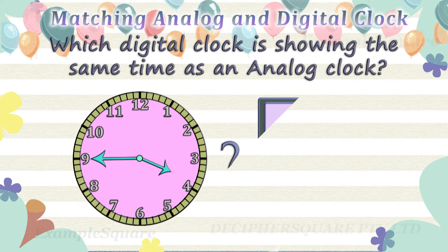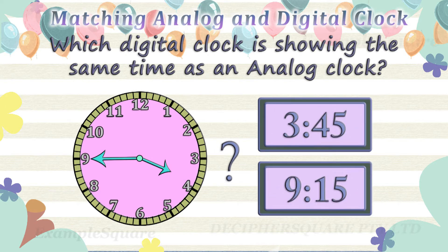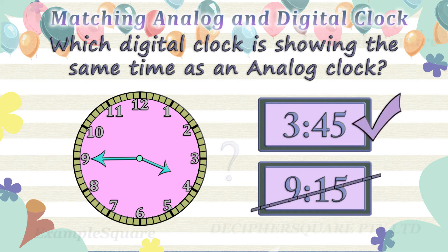Which digital clock is showing the same time as an analog clock? Time in analog clock is 3:45.